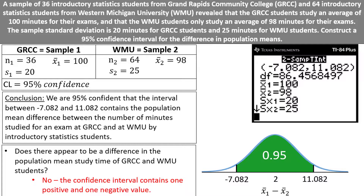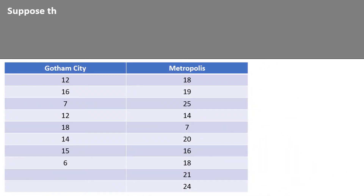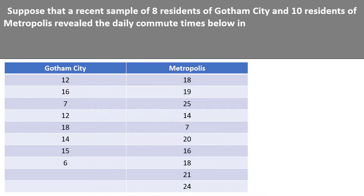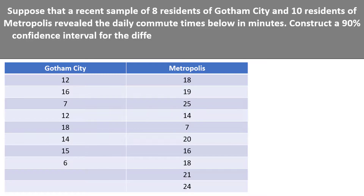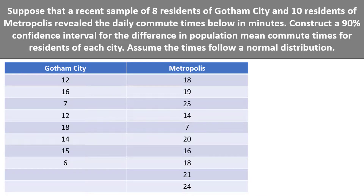Let's look at one more example, this time with data. Suppose that a recent sample of 8 residents of Gotham City and 10 residents of Metropolis revealed the daily commute times below in minutes. Construct a 90% confidence interval for the difference in population mean commute times for residents of each city. Assume that the times follow a normal distribution.